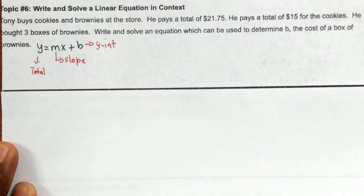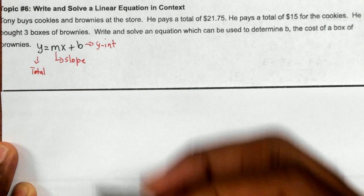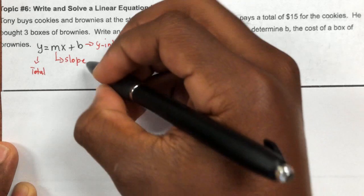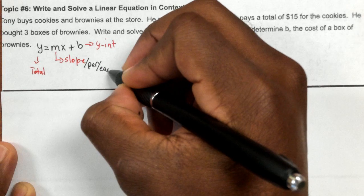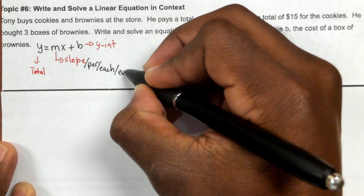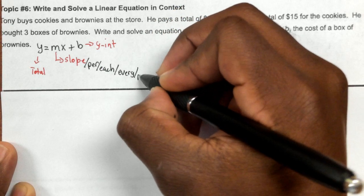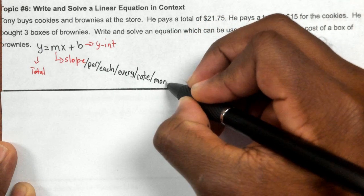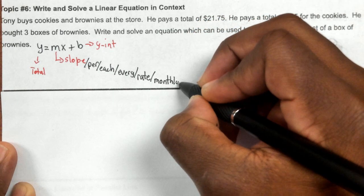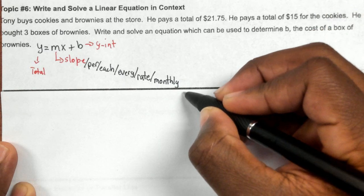So it's very helpful to remember some of the keywords for slope and y-intercept. Some of those keywords for slope are per, each, every, rate, monthly, yearly, hourly, stuff like that. Those are some of the keywords that normally mean slope.